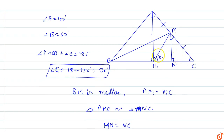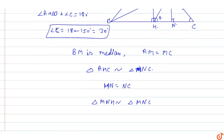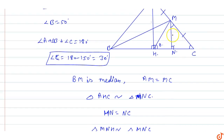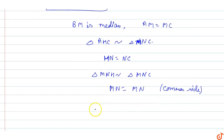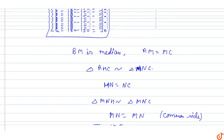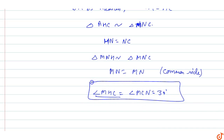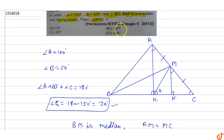So angle MHC equals angle C, which equals 30 degrees. Therefore angle MHC is equal to 30 degrees. Option B will be the correct option. This is the answer for this question.